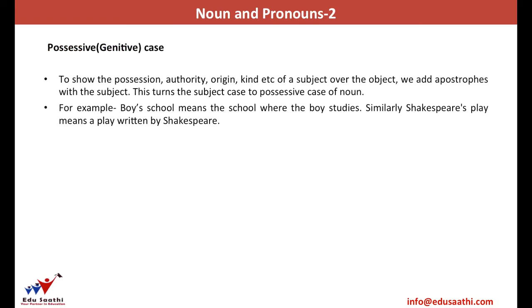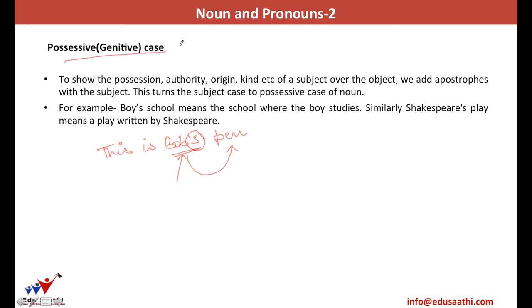Lastly, we have the possessive case of a noun. If I say 'this is my pen' or 'the pen is mine,' I am showing ownership by use of 'my' or 'mine.' Likewise, 'this is Ram's pen' — here Bob is a noun showing ownership of the pen by use of the apostrophe S. This is the possessive or genitive noun case, wherein you are showing the belongingness of one noun to some other noun. So the apostrophe S is the possessive case.